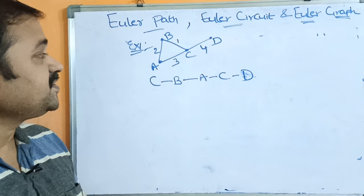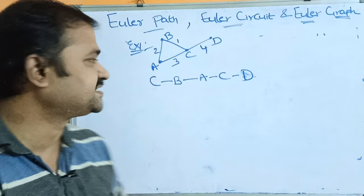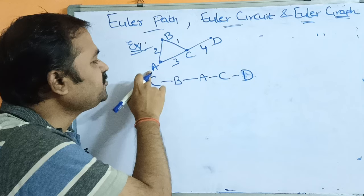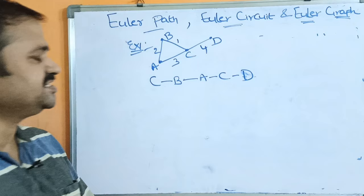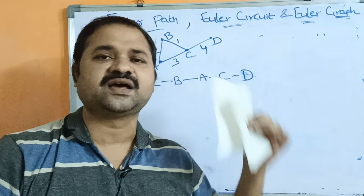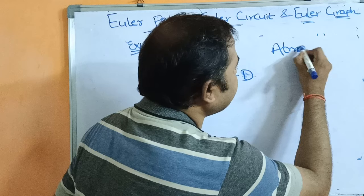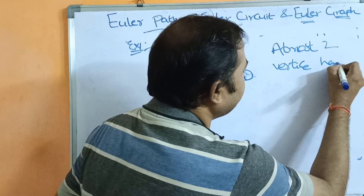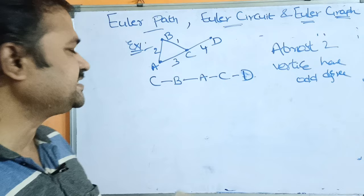So we can say that this graph contains Euler path, because each edge of the graph is visited exactly once: C to B, B to A, A to C, C to D. Without drawing the diagram, we can also check whether the graph contains Euler path by using the condition: at most two vertices have odd degree.